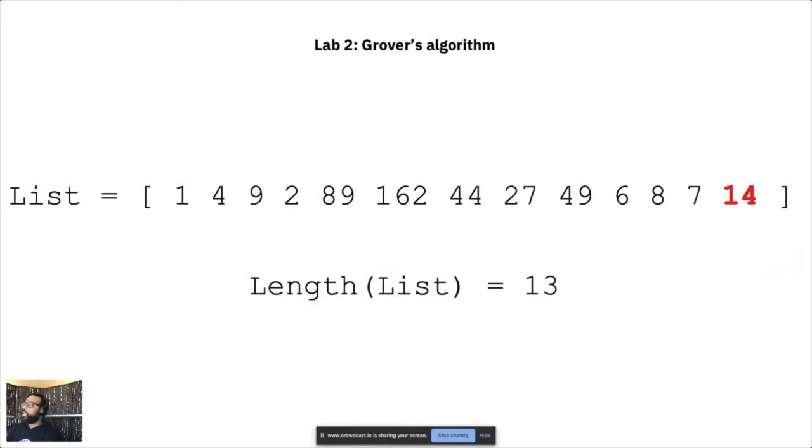Let's switch over to my screen here. On my screen, you can see I have a list that I'm trying to show you with 13 items. Grover's algorithm from your lectures shows you how to solve the problem of unstructured search using your quantum computer.